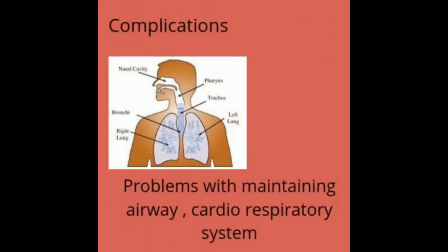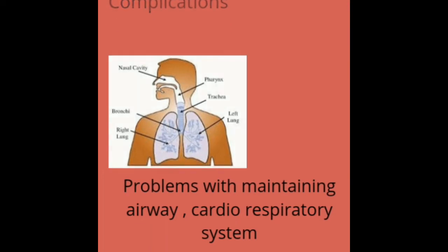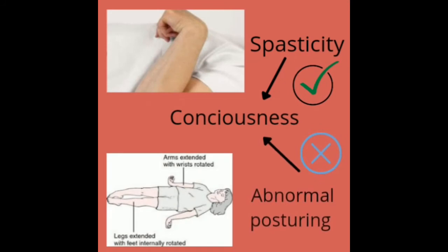In patients with decerebrate posturing, consciousness is lost — they are mostly unconscious. They will have difficulty maintaining their airway, and respiratory complications can occur. A major difference between spasticity and abnormal posturing is that in spasticity, consciousness is present, whereas in decerebrate posturing, consciousness is lost.